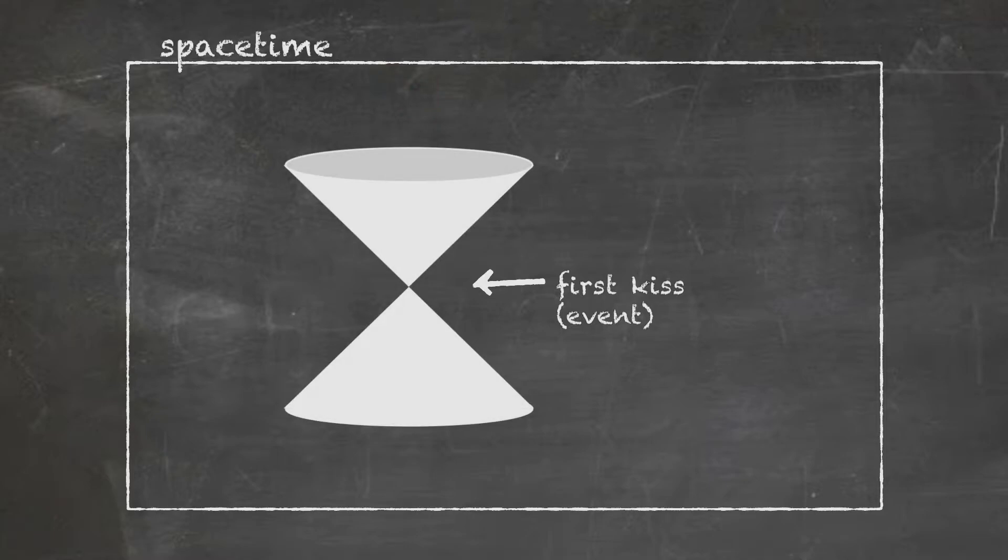Let's start with some event, like the moment of your first kiss. It happens at a place and a time. Now draw the double cone, the light cone, at that same event, and let's see what we can learn from this scenario.